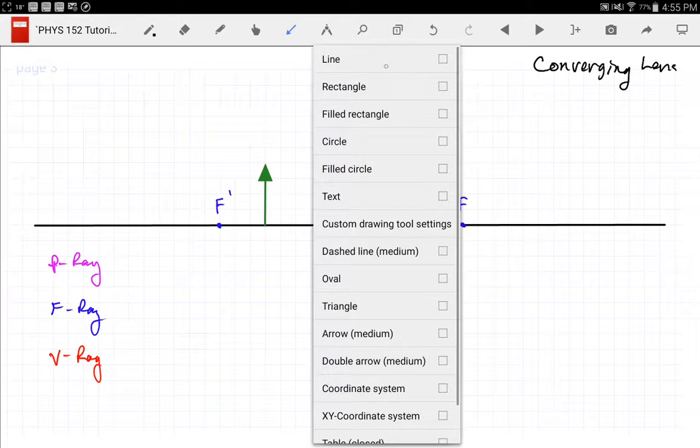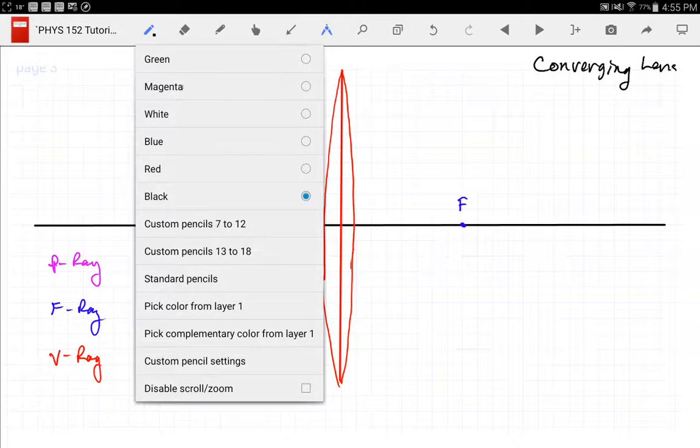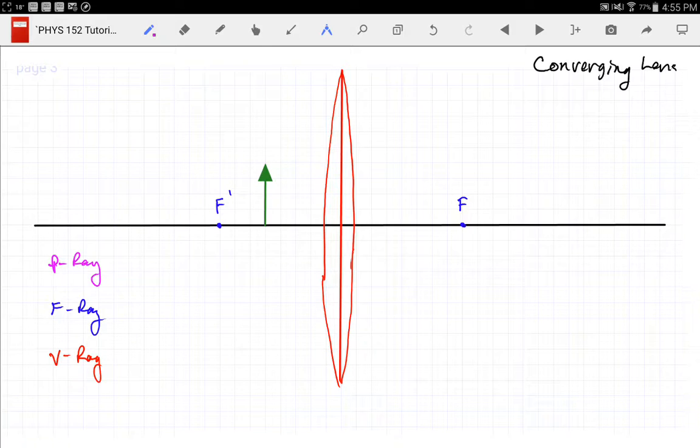So now, let's go ahead and do our ray construction. I've got the three rays already written here. I have the parallel ray, so I'm going to start at the tip of my object and go parallel to the principal axis until I hit my lens. And then we'll refract and go through the principal focal point. That's my parallel ray.